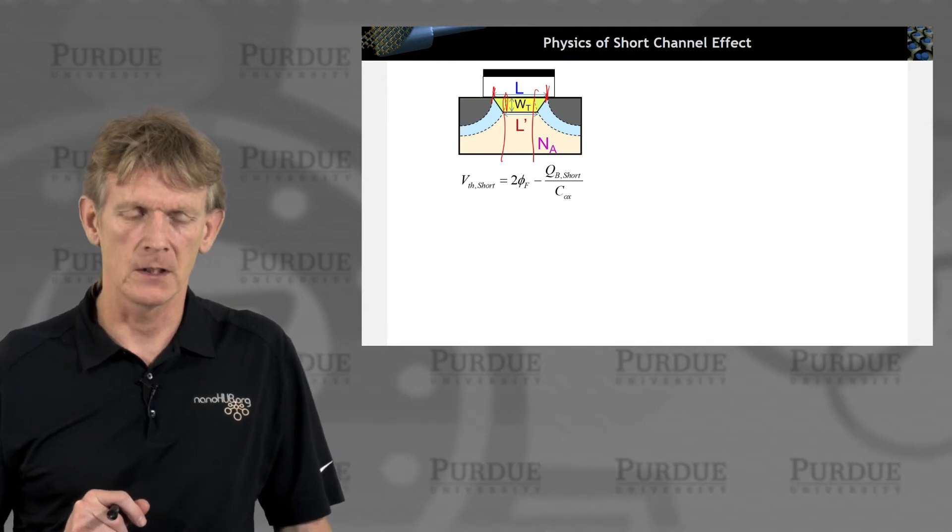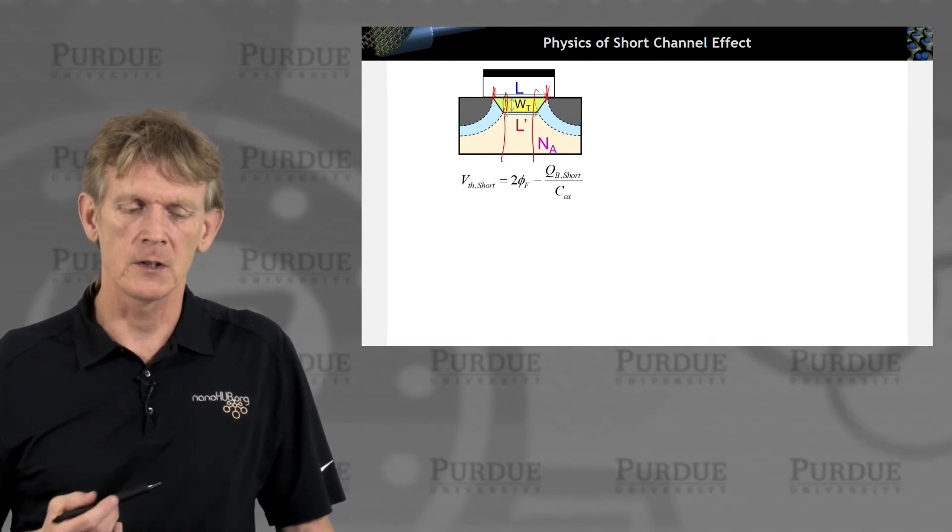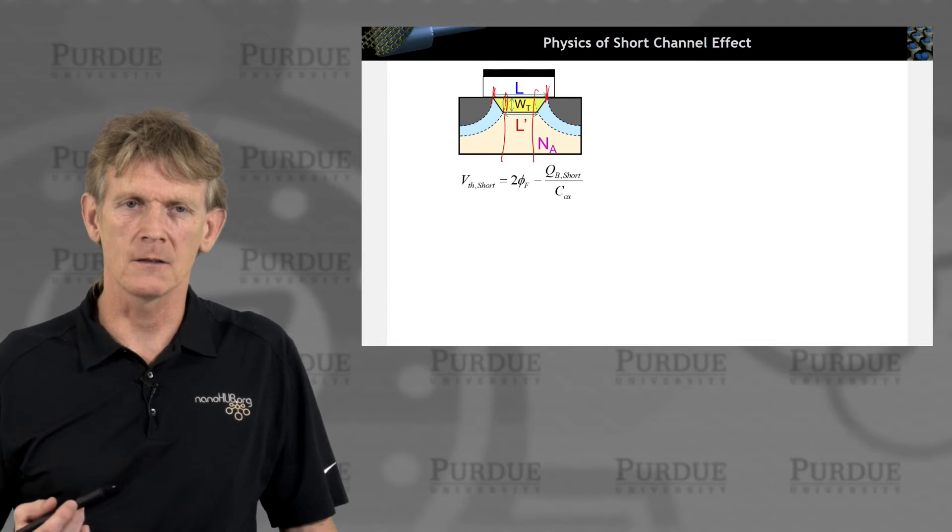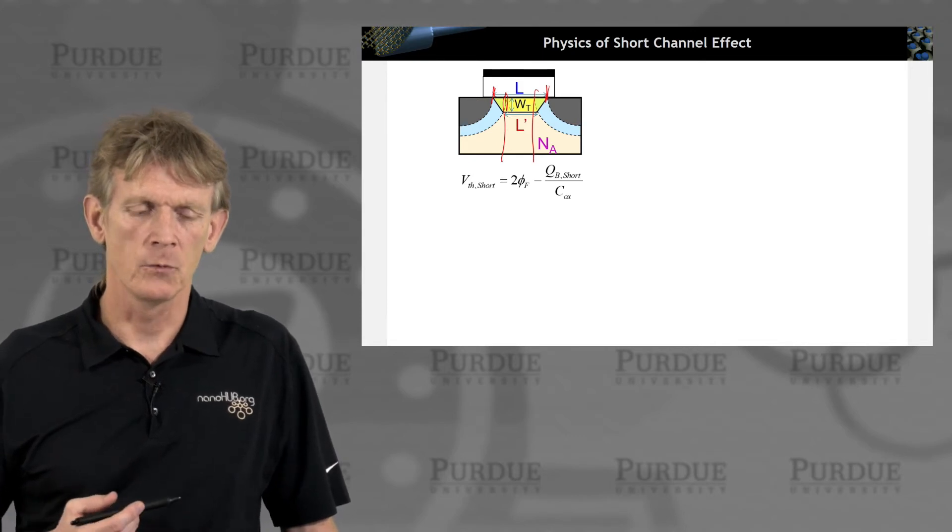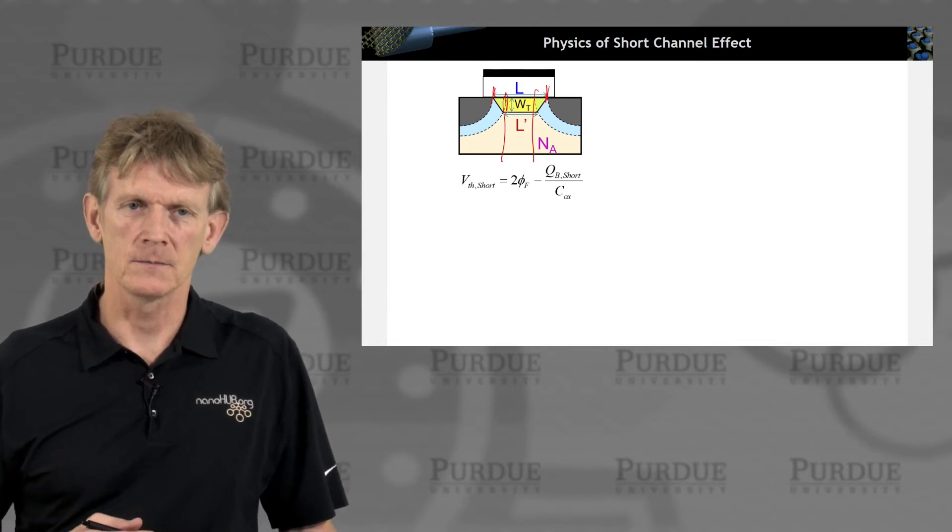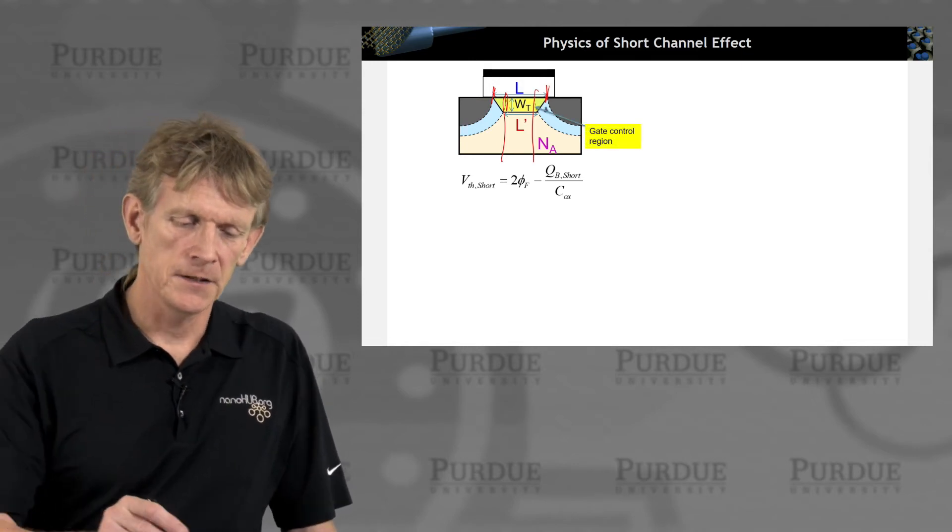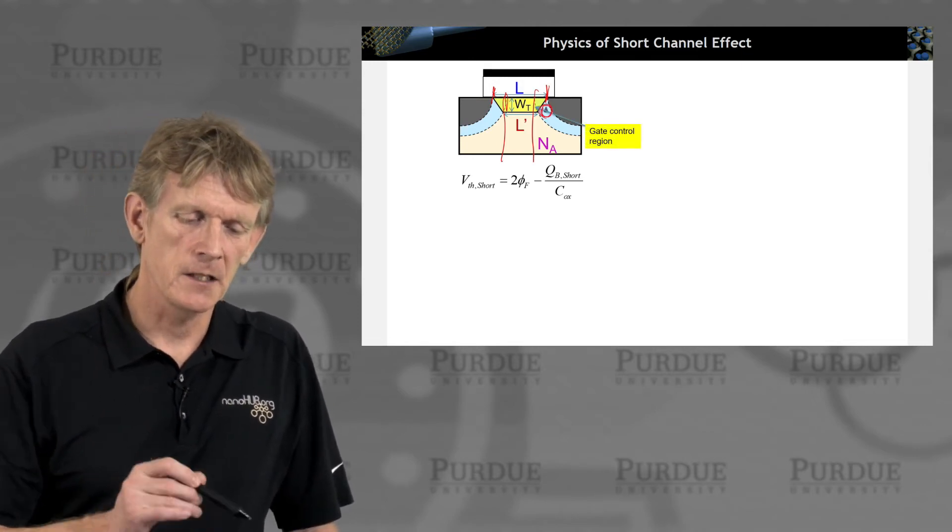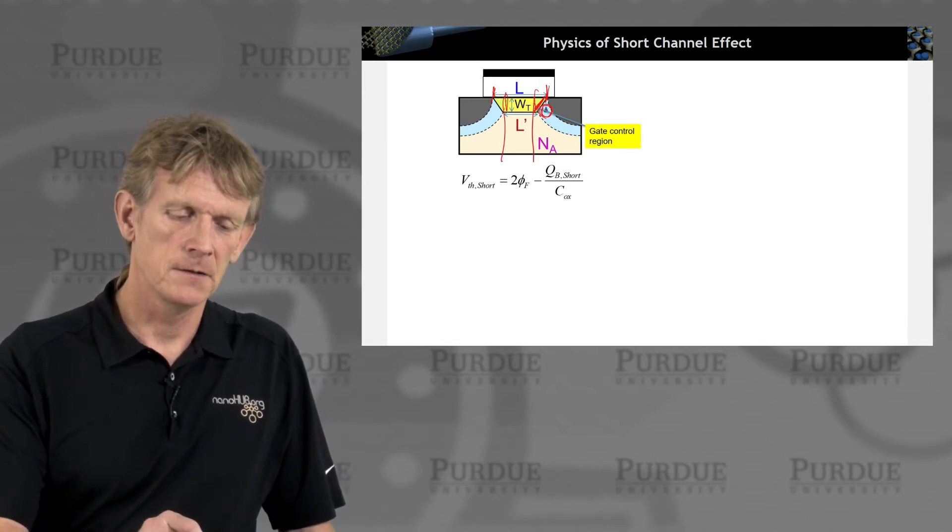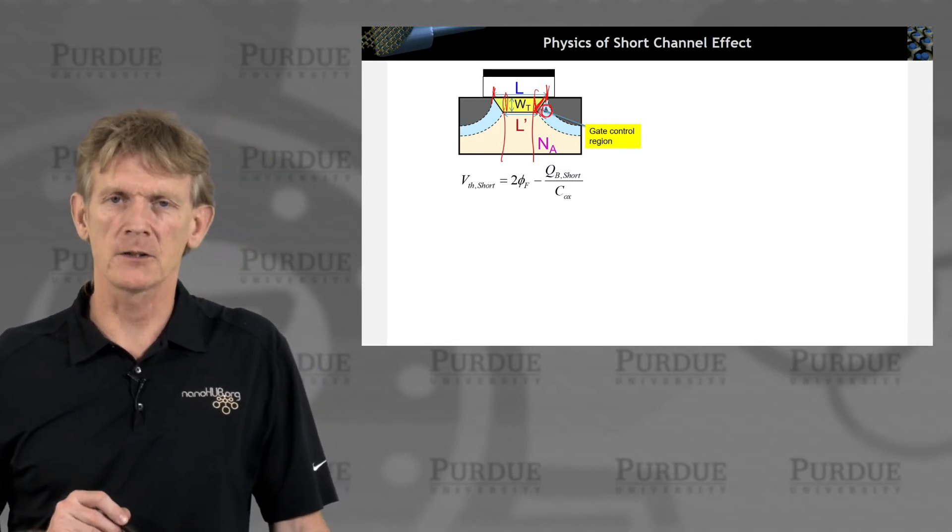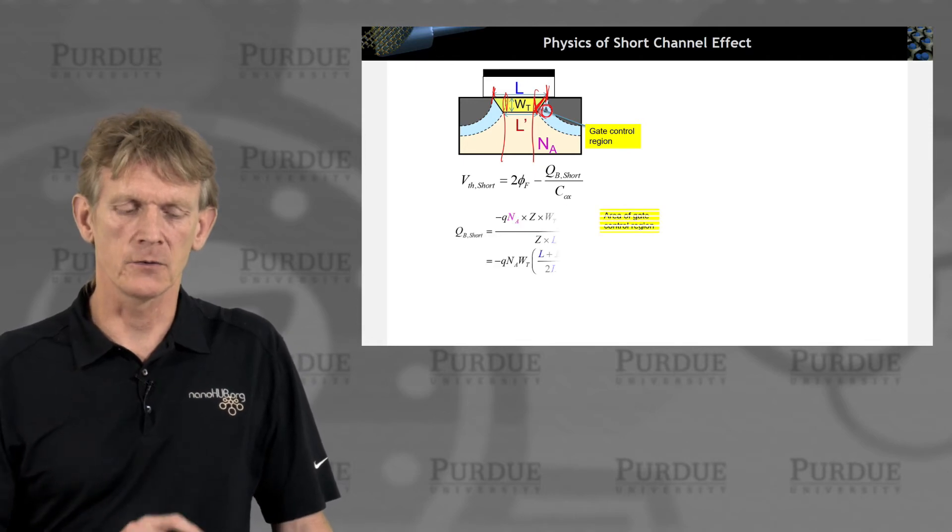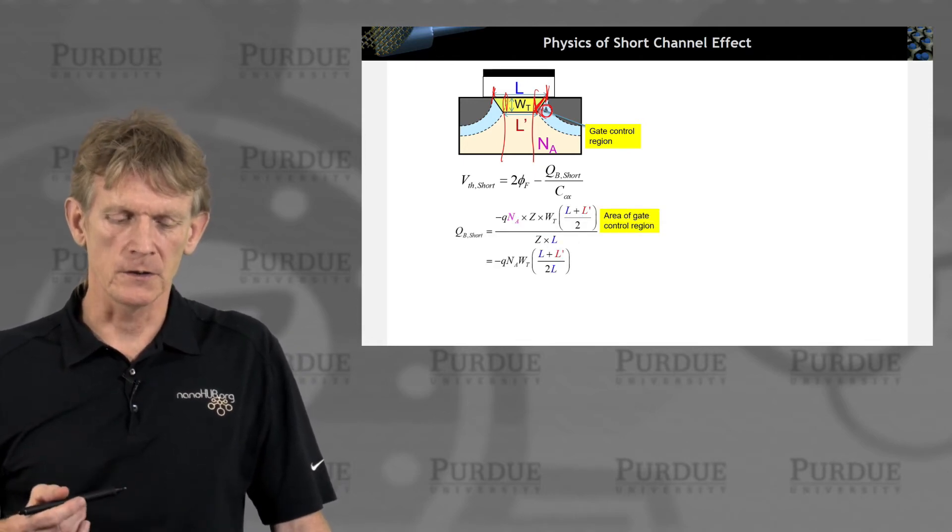You have an electrical channel length L prime, and you can exemplify this with this trapezoid. That's the region over which in Wt, the width of your channel, you want to control the electrostatics. This drain potential is going to impact this area, and we want to calculate the effect of this gate control region.